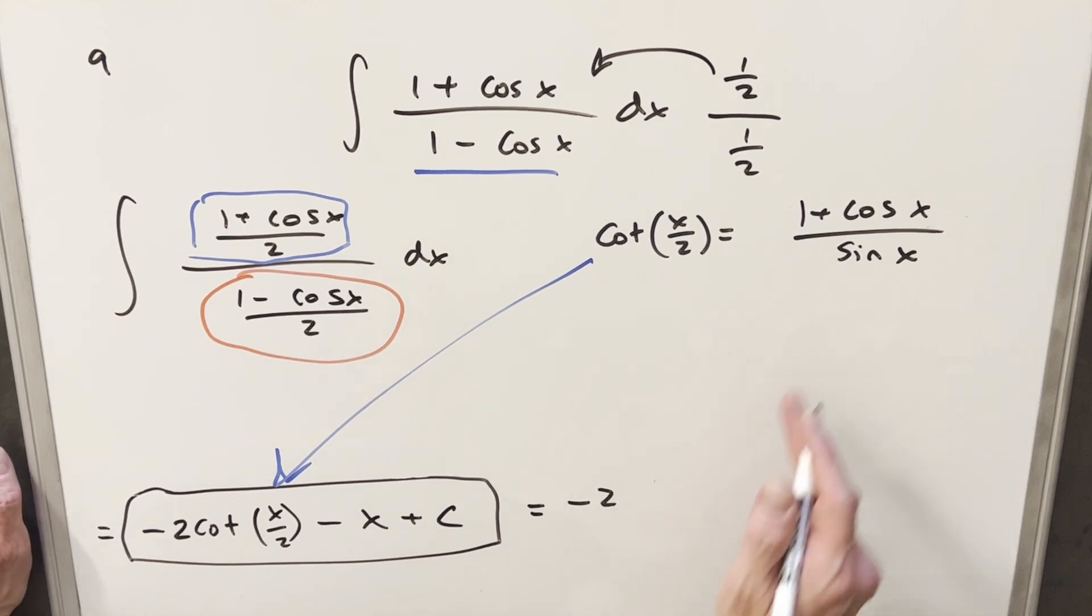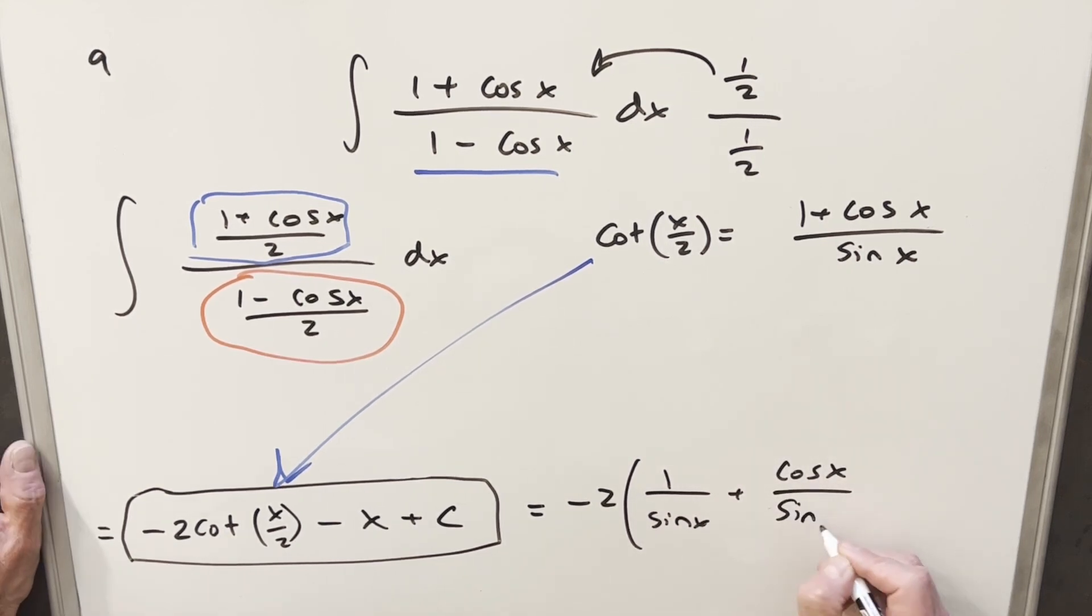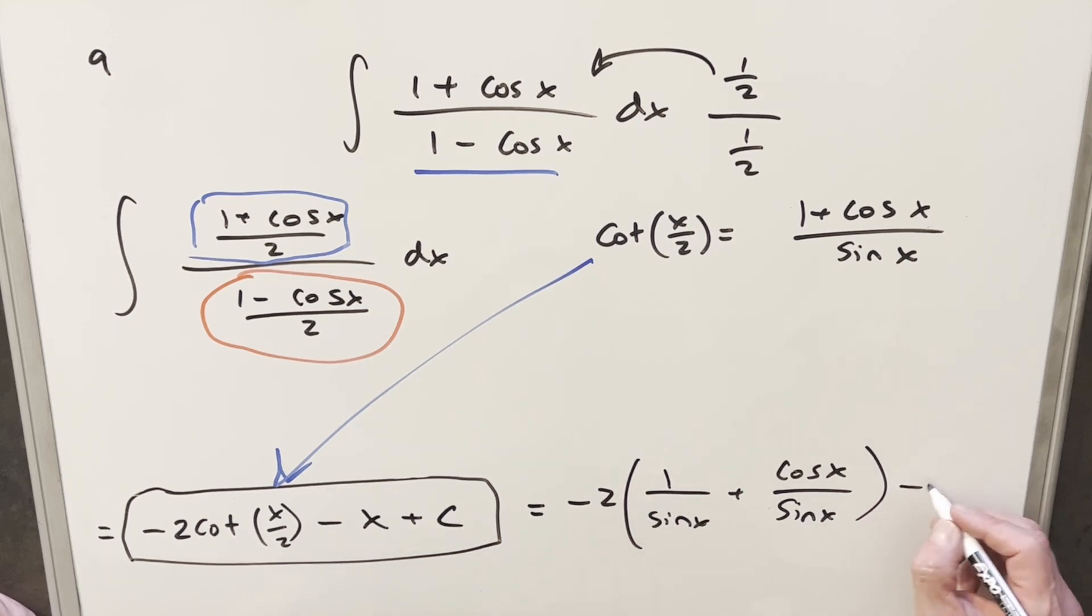What I'm going to do, we have our minus 2 out front. I'm going to split this up into two terms. I'm going to write this as 1 over sine x plus cosine x over sine x. And then we still have our minus x out here.